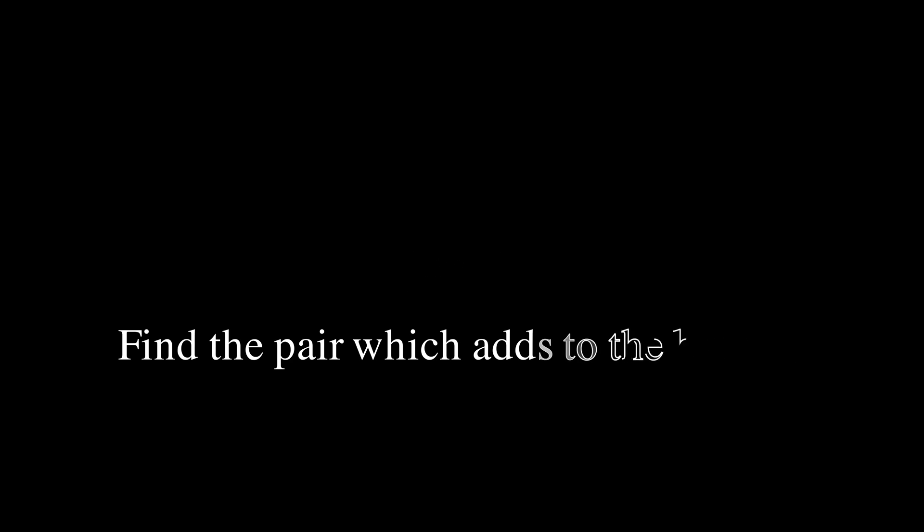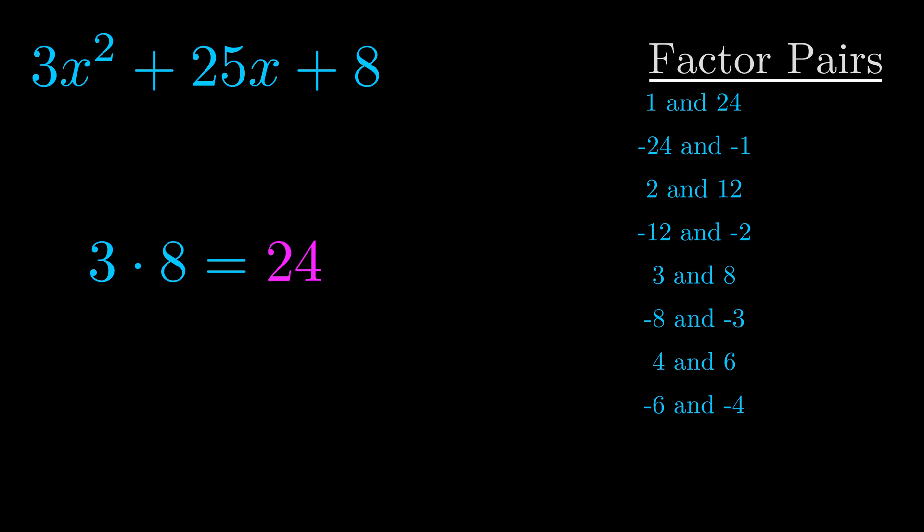The b value is the coefficient on the x term. That's the middle term, the one that we haven't done anything with yet. And really this is the only factor pair that we need.